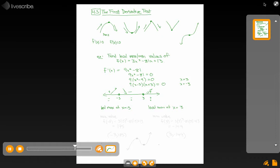If I want the actual value of the function, the max value is going to be what you get when you find out f of negative 3. The minimum value is when you do f of 3.